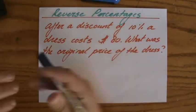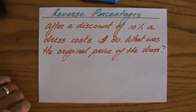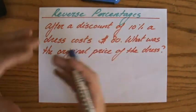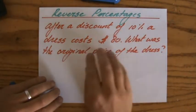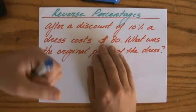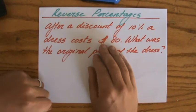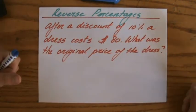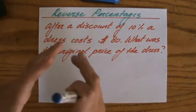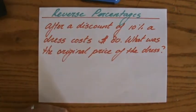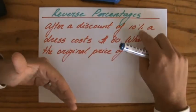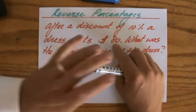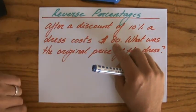This is a reverse percentage question. Before, you would get a question like: a dress costs $80, you get a 10% discount, what is the new price? But that's not what is happening now. You already got the 10% discount and the dress is now $80 — what was the original price?